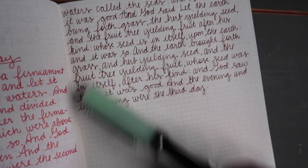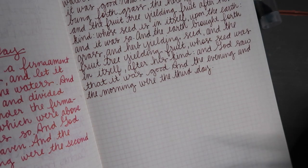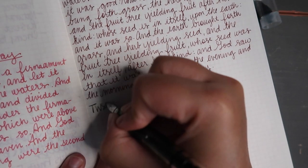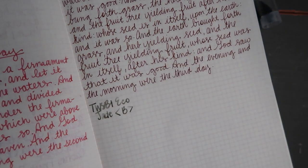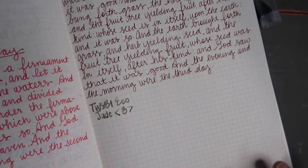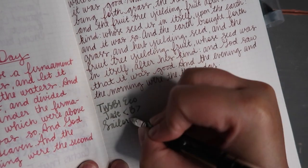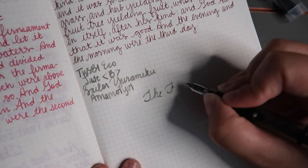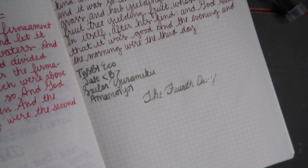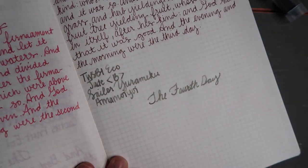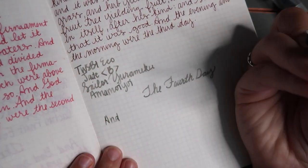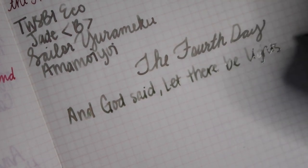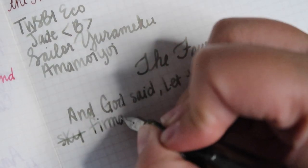The next pen I'm using is my TWSBI Eco in Jade. This is a broad nib, and I remember what it felt like to immediately switch from that extra fine to the broad. I was so thankful because it was more effortless while writing and overall was much more comfortable. I do like the extra fine. I don't necessarily have an issue with it. I don't hate it, but I feel more comfortable writing with the broad nib. The ink I'm using is Sailor Yonaga Amamoyo. I believe that's how you pronounce it. Now we are at the fourth day.